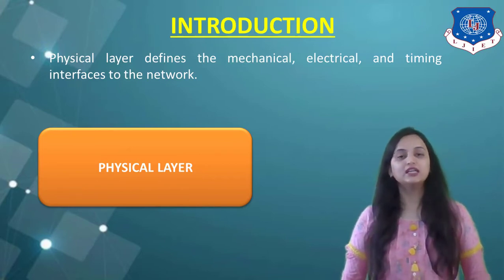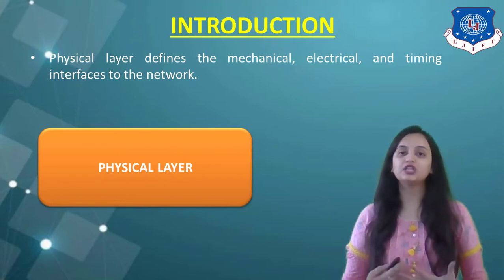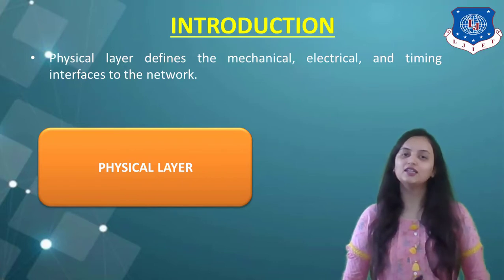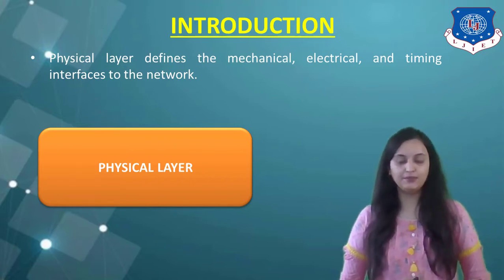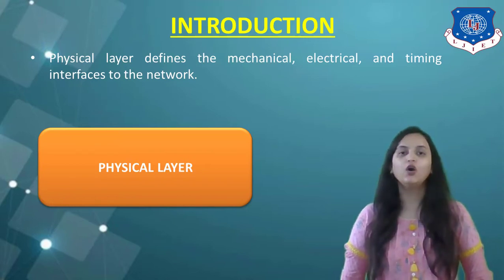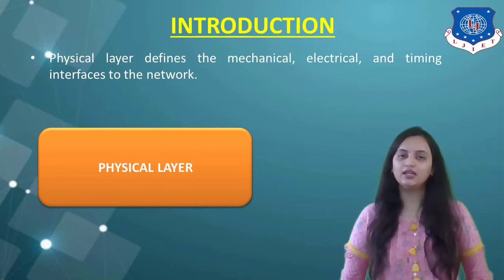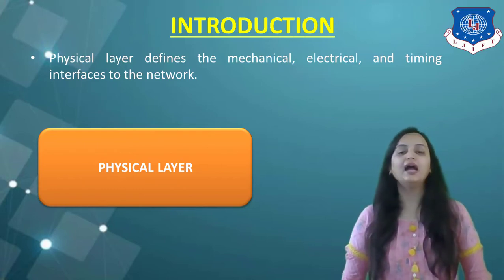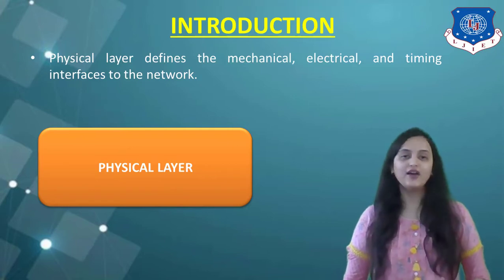In this, we have to consider the transmission medium using which data can be transmitted. The transmission medium can be of two different types. The first is wired transmission medium, also called guided transmission medium. The second is wireless transmission medium, also referred to as unguided transmission medium. We are going to consider these two types and what devices can be used for data transmission.